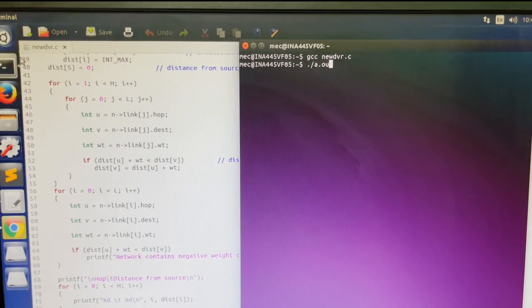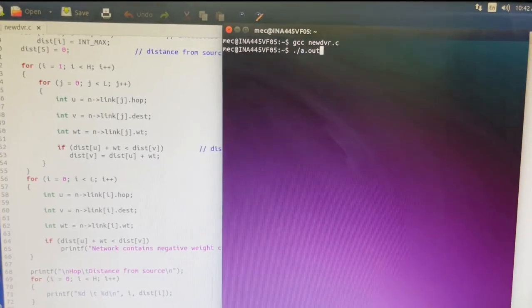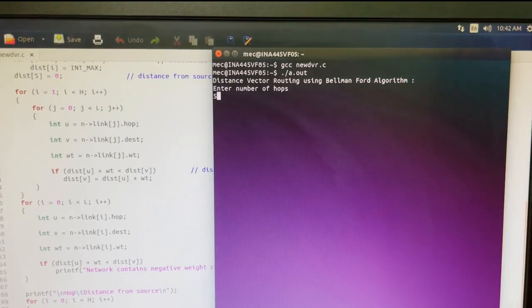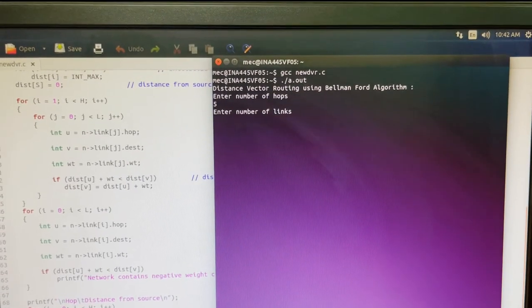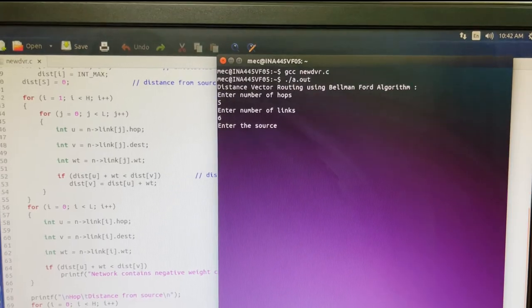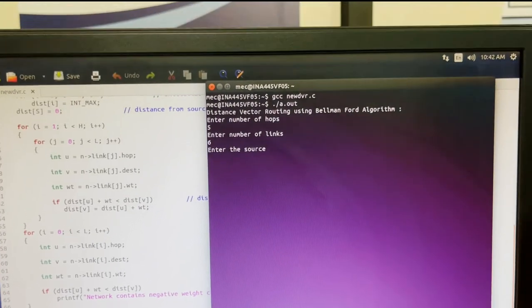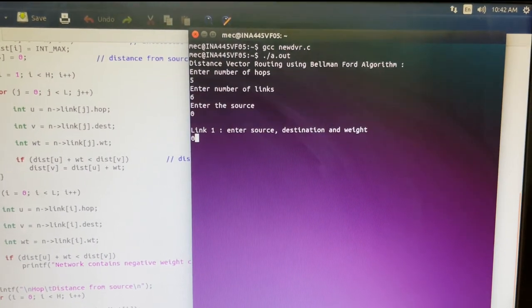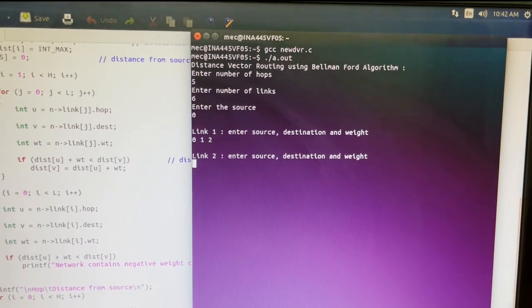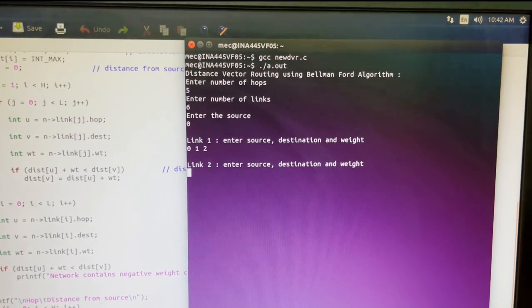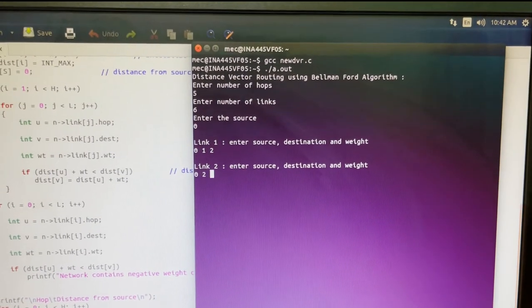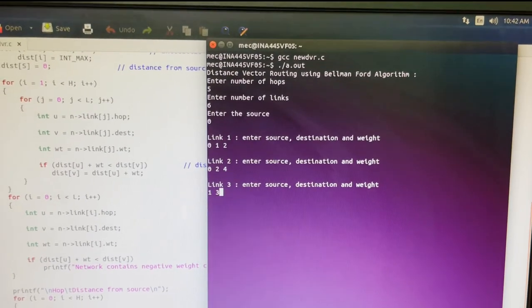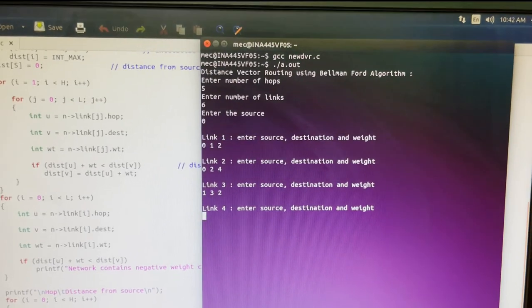The inputs given here are the number of vertices which is the number of hops, and the number of links, and the information regarding each link. That is 5, 6, and the information of each link. So before that we also mentioned the source. So here 0 is the source. Each of the metric regarding a link is separated by a space. After the information about a particular link is entered, we press enter. This is repeated for all the 6 links.